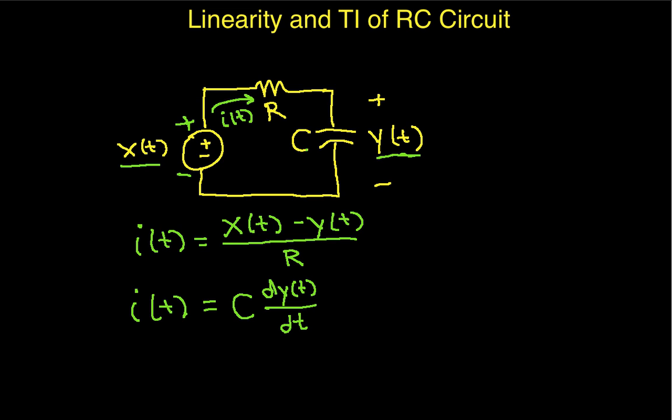So now we can set both of these expressions for i(t) equal to each other. And we get that x(t) minus y(t) over R is equal to C dy/dt.